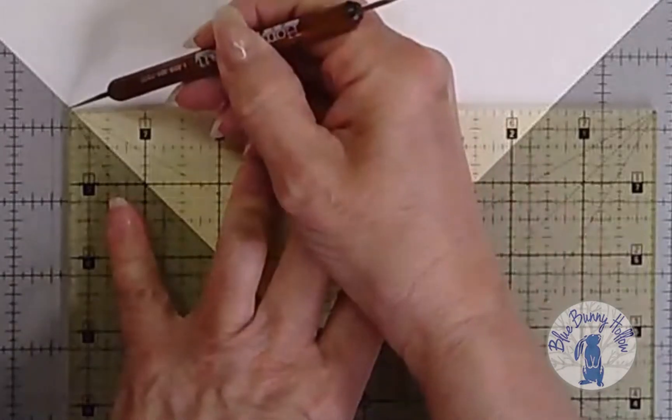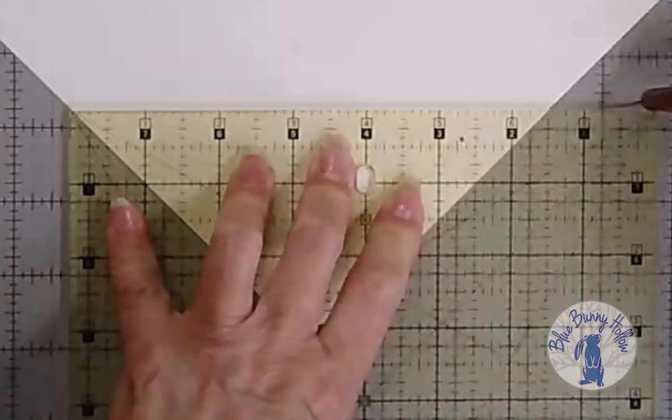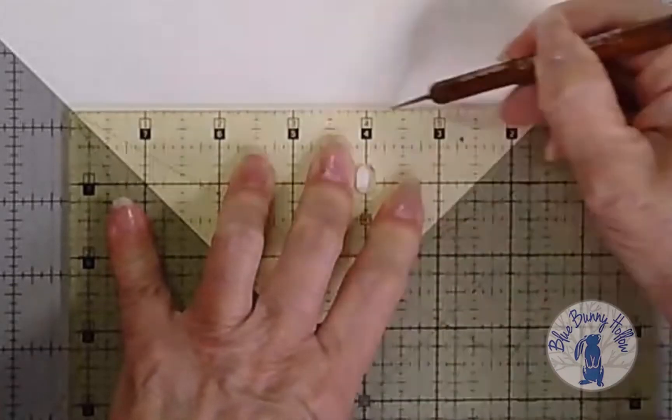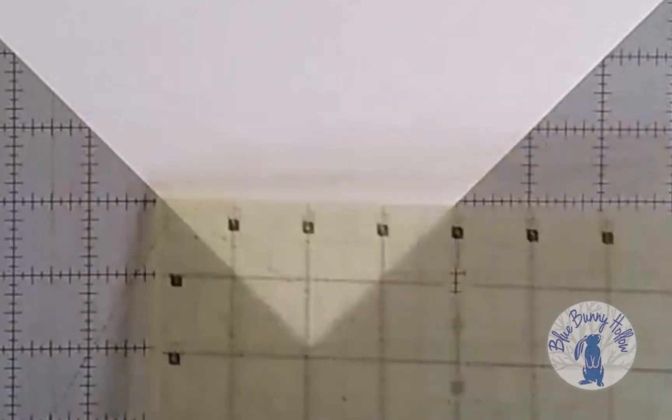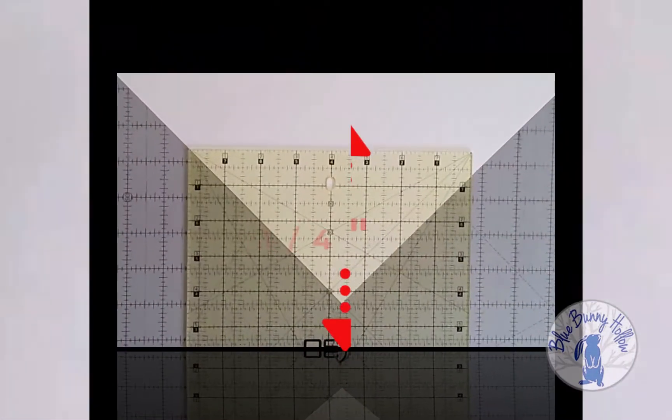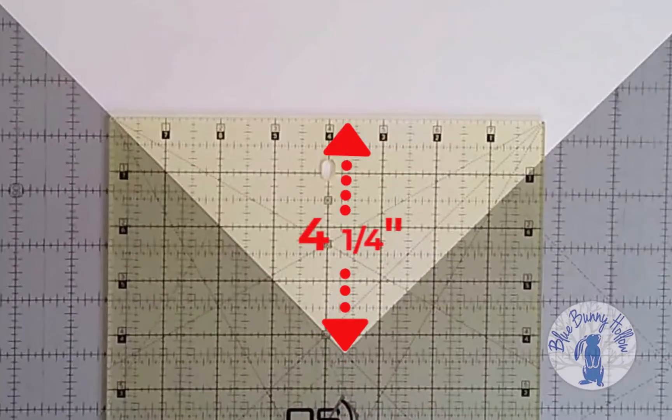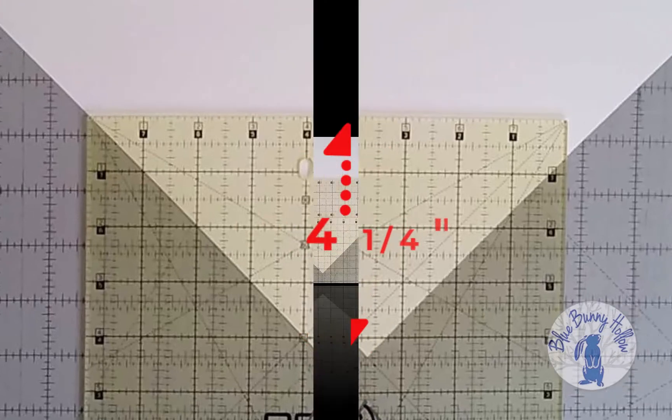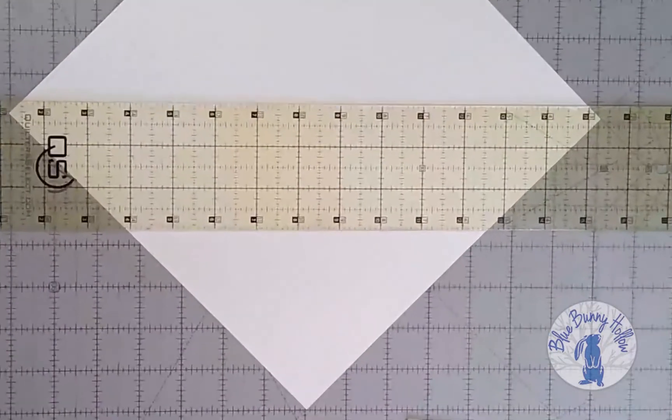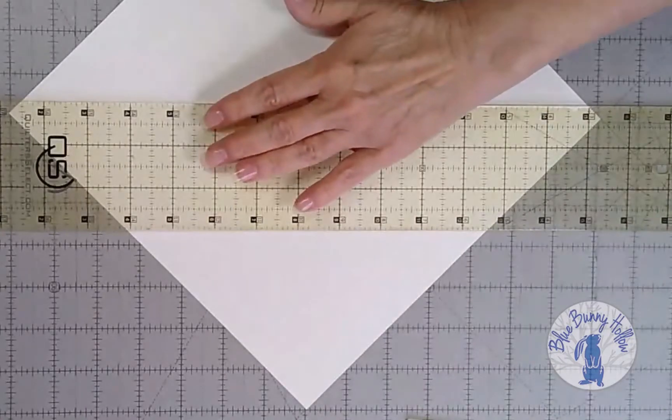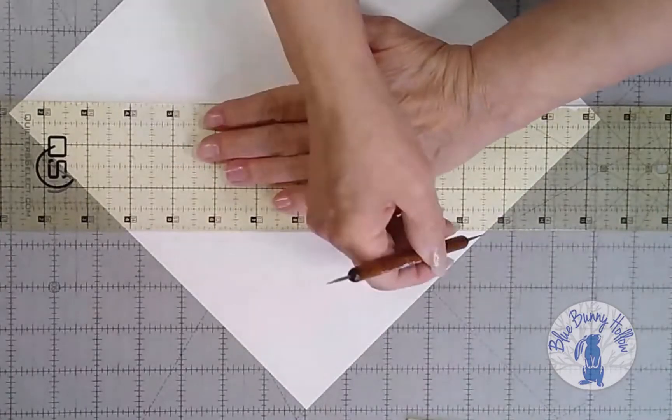Repeat for the opposite corner. The measurement for the large corner is four and a quarter inches. Notice the ruler does not fit across the paper. No problem. Place a longer ruler along the top edge of the first ruler. Remove the first ruler and score the line with a burnisher. Repeat for the opposite corner.